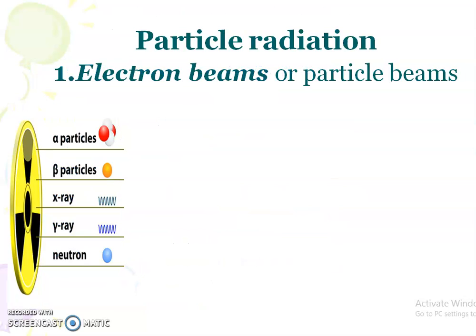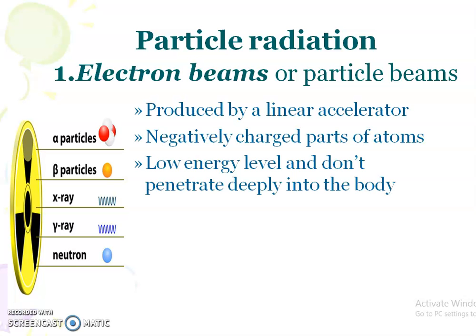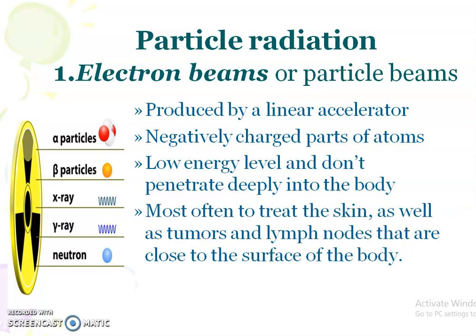The next category is particle radiation. The first type is electron beams, which are also produced by a linear accelerator. Electrons are the negatively charged parts of an atom. They have a low energy level and do not penetrate deeply into the body. Therefore, electron beams are used to treat cancers in the skin as well as tumors and lymph nodes that are very close to the surface of the body.